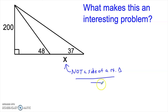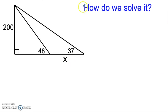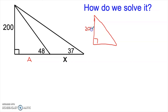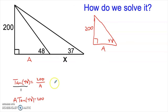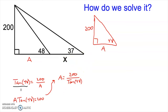What makes this interesting is that the side we're looking for is just not a side of one of the right triangles. What we're going to do is take some of the other right triangles in the picture and use them to figure this out. If I call this piece 'a' and redraw that little right triangle, we can simply say that the tangent of 48 is 200 over a. Cross-multiplying gives us a times tangent of 48 equals 200, so a equals 200 divided by tangent of 48. But how is that helpful? We don't want to know what a is — we want to know what x is.